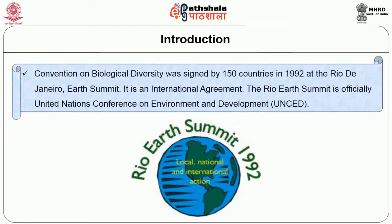What made the Convention on Biological Diversity come into force? In 1992 at Rio de Janeiro, there was an Earth Summit and the Convention on Biological Diversity was signed by 150 countries. It is an international agreement, and the Rio Earth Summit is officially called the United Nations Conference on Environment and Development.